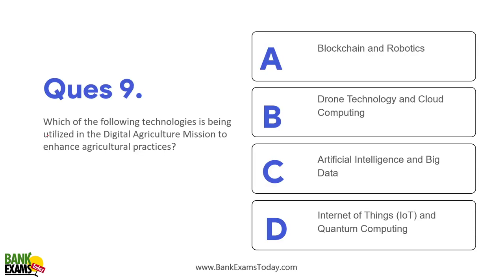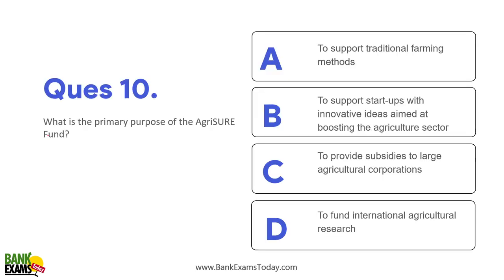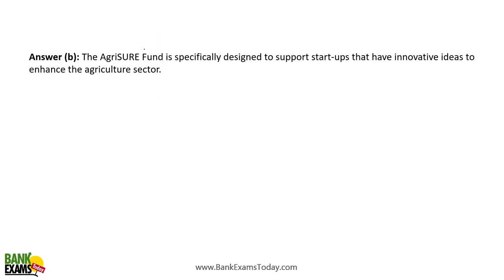Which technology is being utilized in the Digital Agriculture Mission to enhance agricultural practices? Artificial intelligence and big data are being used. The primary purpose of the Agri-Sure Fund — a new scheme — is to support startups and innovative ideas aimed at boosting the agriculture sector. Agri-Sure Fund has been introduced for that purpose, and it is an important question.